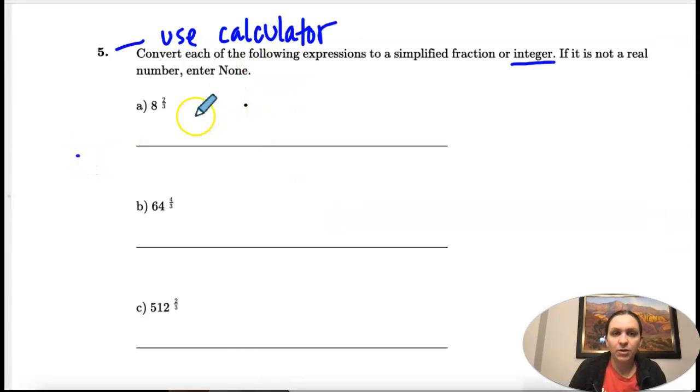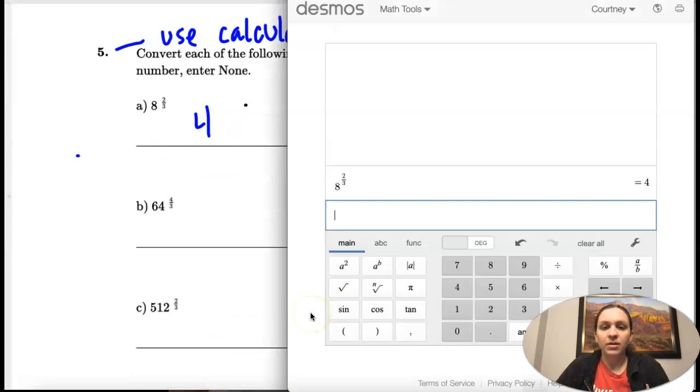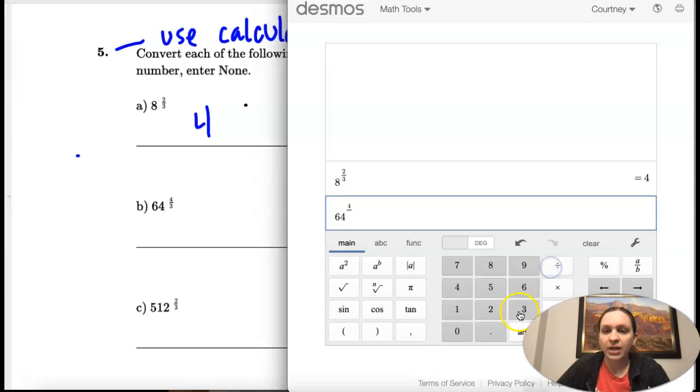These ones are pretty quick. Four. And then part B, I have 64, here's my exponent, and then four divided by three, 256.